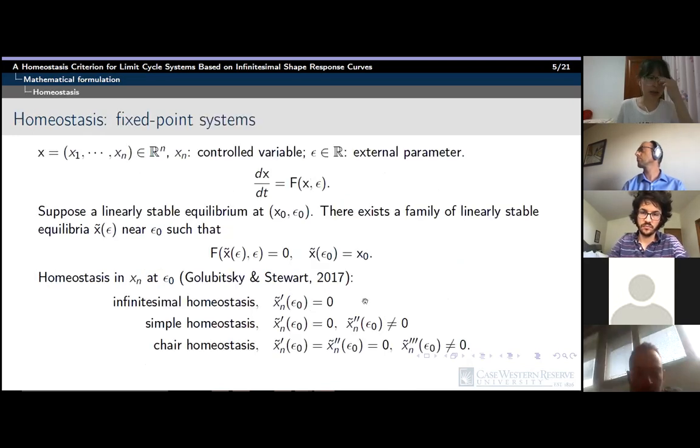Let's first go back to an n-dimensional fixed point dynamical system. The last variable Xn is the controlled one. Suppose at some epsilon zero, the system converges to a fixed point X zero. As epsilon varies around epsilon zero, the location of the fixed point may shift as a function of epsilon, while we want the controlled variable Xn to remain approximately constant.